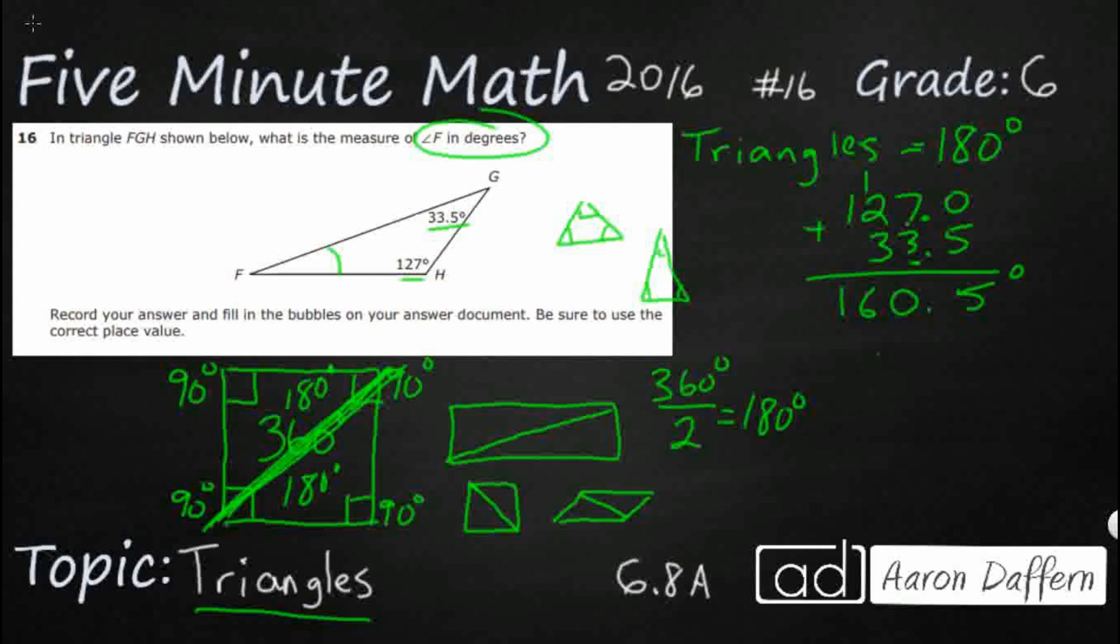Now, how much do we have all together? We have 180. So let's take our 160.5, and we're going to subtract that. Once again, we need 0.0.